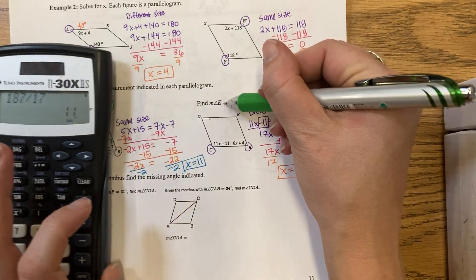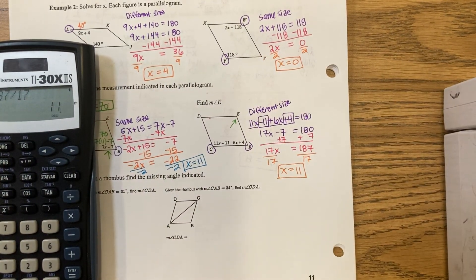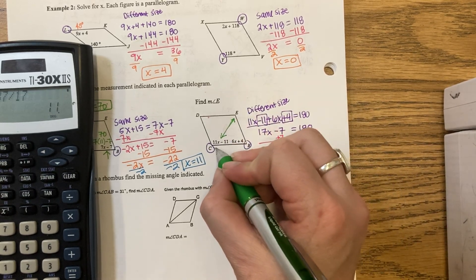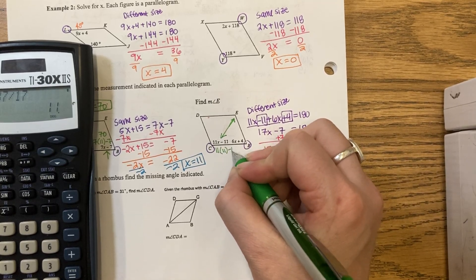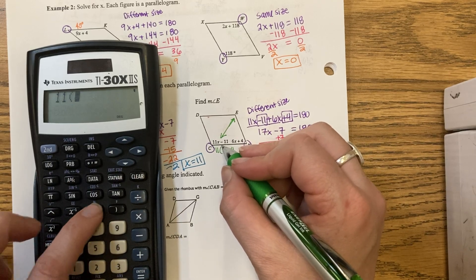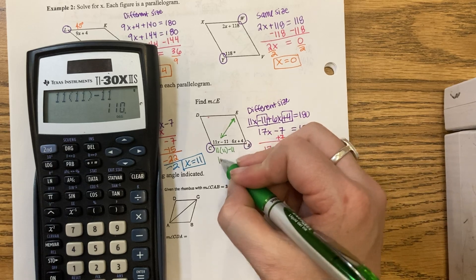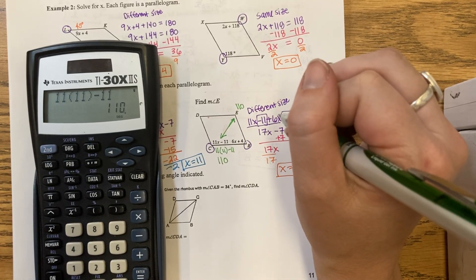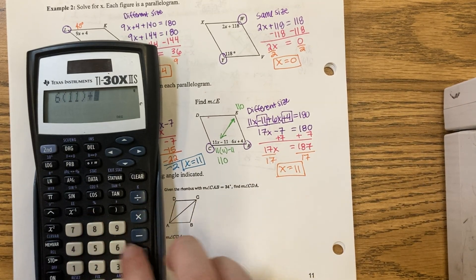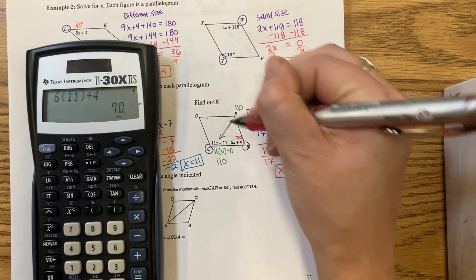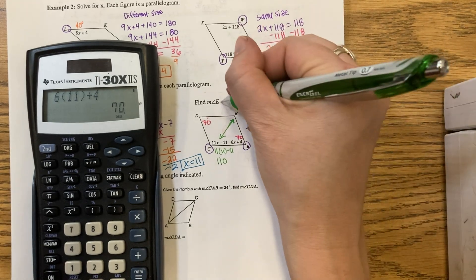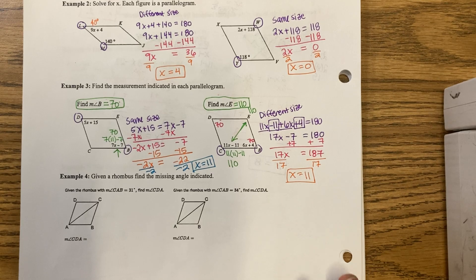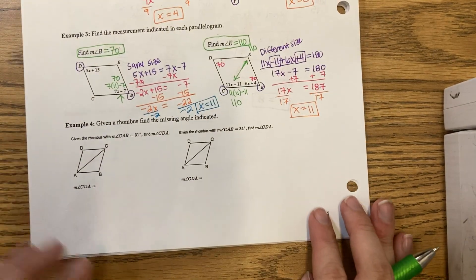It wants me to find angle E. Angle E isn't even there, but I know that angle E should match the angle that's the same size. If I plug in an 11 here, 11 times 11 makes 110. That means this angle will also be 110. If I had plugged in here, 6 times 11 plus 4 gives us 70. This D would also be 70.